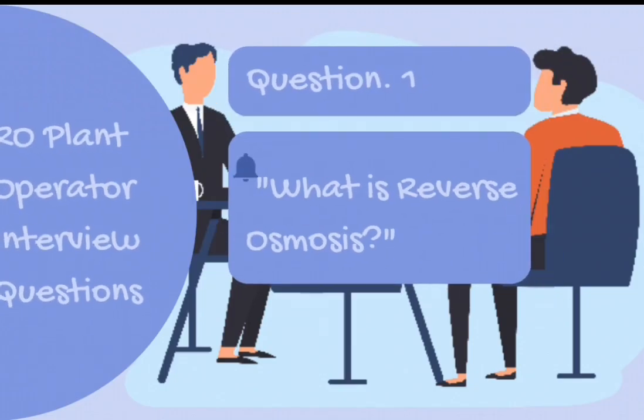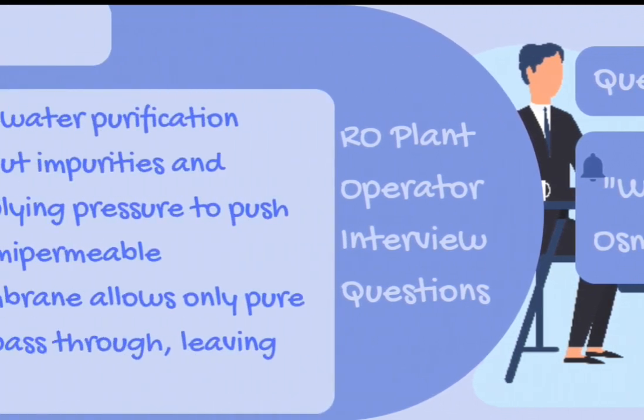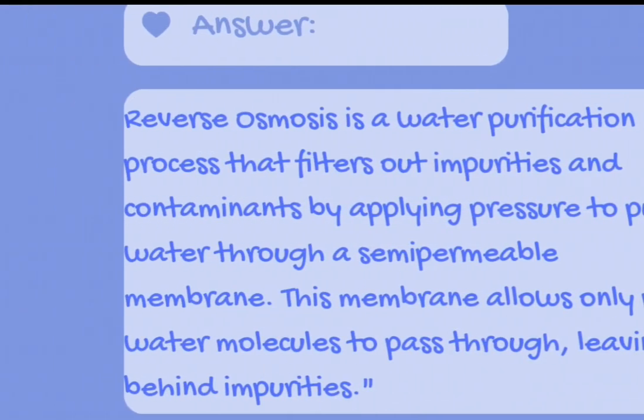Question number 1: What is reverse osmosis? Answer: Reverse osmosis is a water purification process that filters out impurities and contaminants by applying pressure to push water through a semi-permeable membrane. This membrane allows only pure water molecules to pass through, leaving behind impurities.